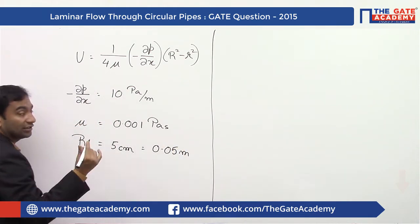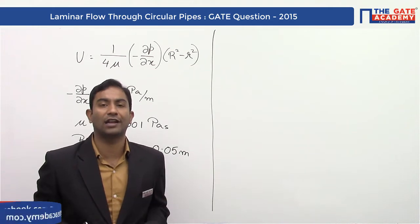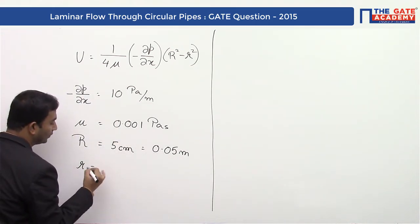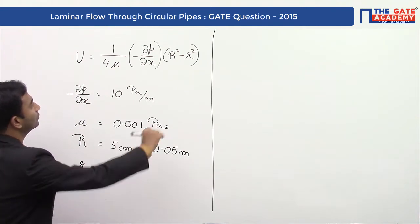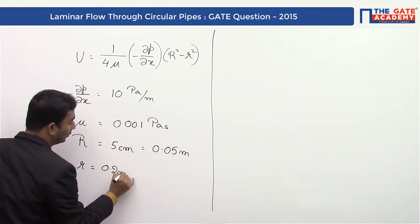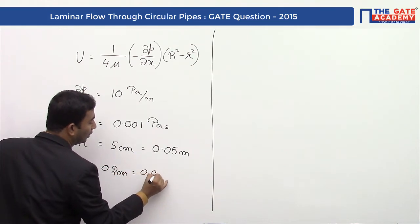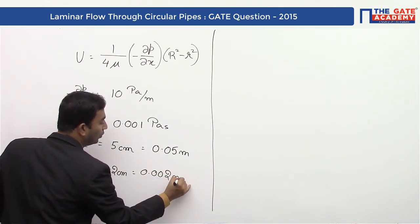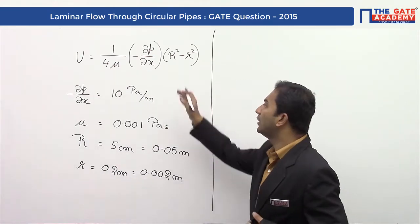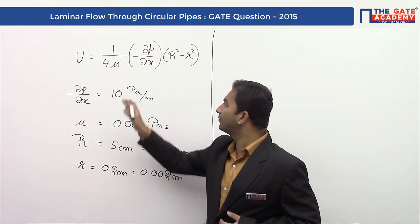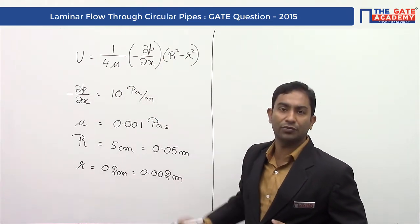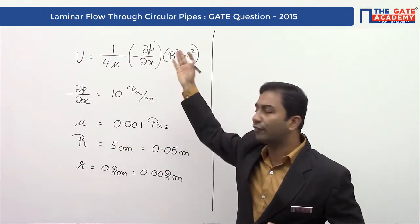And finally, the distance at which we have to find out the velocity is given to us as r equal to 0.2 centimeter, which is equal to 0.002 meter. So these are the given data. And with the help of this formula, we have everything that we need as given in the question. So putting the values in the formula: